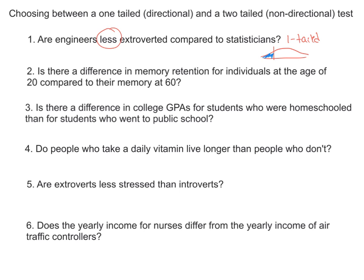Number two: Is there a difference in memory retention for individuals at the age of 20 compared to their memory at 60? The big word to look at here is 'difference.' Is there a difference in memory retention? It could be that their memory is better at 20 versus 60, it could be that their memory is worse at 60 versus 20. So the research doesn't really know — this is an open-ended question. Anytime you hear a word like change, difference, or effect, that's going to be a two-tailed test.